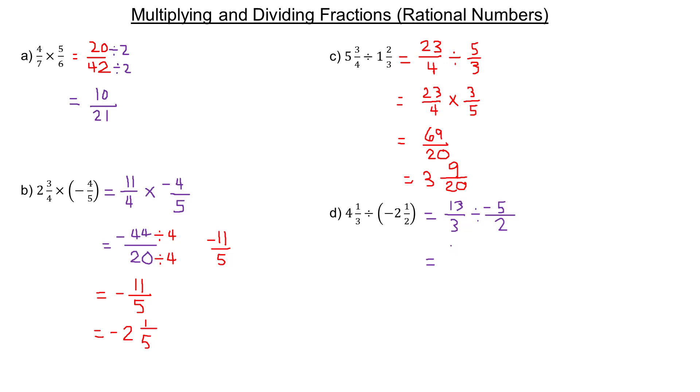We keep the first fraction the same and change division into multiplying by the reciprocal. The reciprocal is -2/5. So we multiply: 13 times -2 is -26, and in the denominator, 3 times 5 is 15.